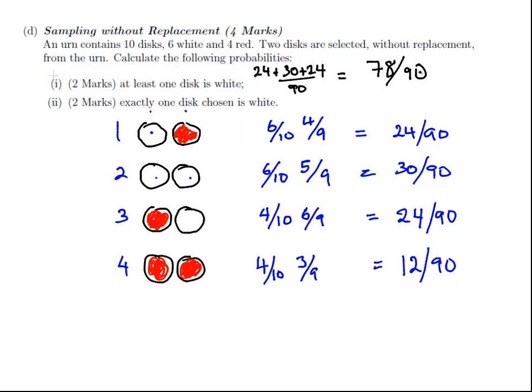Exactly one disk is chosen. Well, there's two scenarios here. This scenario and this scenario. So, the disjoint events, what's the combined probability? It's 24 plus 24 over 90. And that's equal to 48 over 90. Again, we can leave that as a fraction. We can simplify them down much simpler, but that's just minor calculator work now. That's sampling with replacement and without replacement.